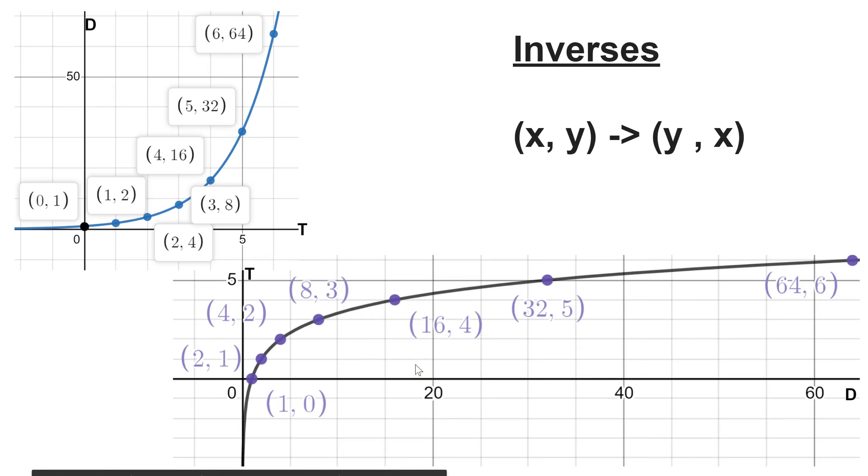We can tell that these are inverses because each xy point, such as (4, 16), has been inverted or flipped. So (16, 4), xy became yx, which we know is one of the three key indicators of an inverse function relationship.